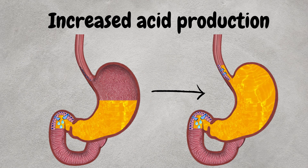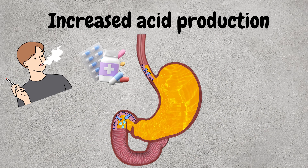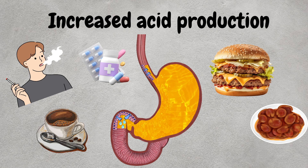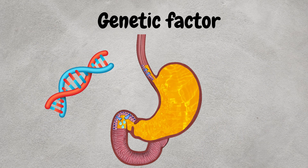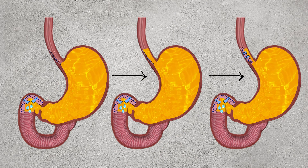Increased acid production is also a cause. Smoking, certain medications like non-steroidal anti-inflammatory drugs (NSAIDs), and a poor diet — such as consuming foods high in fat, acidic foods, caffeine, and alcohol — may lead to increased acid production and thus exacerbate symptoms and contribute to the development of Barrett's esophagus. The role of genetics is not fully understood; there may be a genetic predisposition for some individuals to develop this condition. Overall, Barrett's esophagus typically develops over many years of chronic acid reflux.